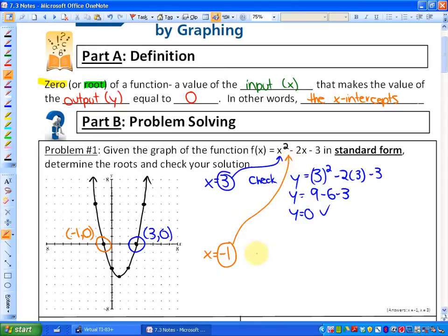When I substitute three into the function, I get an output of zero. So now I'm going to check if when I substitute negative one into the function, I get zero as well. So just evaluate. Negative one squared is positive one, and this does equal zero. So in both cases, the input value of x gives us an output of zero.